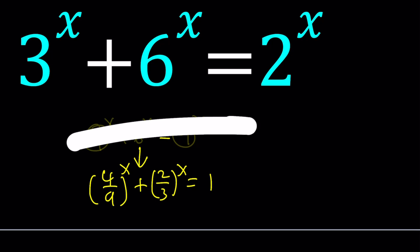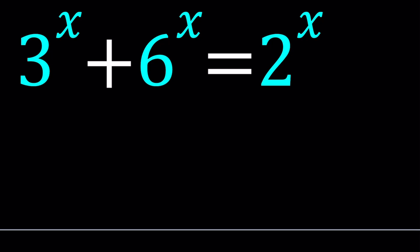With this equation though, if you divide everything by the largest base which is 6, you get the following: (3/6)^x + (6/6), which is 1, and this gives you (2/6)^x. If you simplify this, you get (1/2)^x and (1/3)^x.